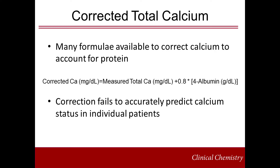Because total calcium concentration changes with protein concentration, several efforts have been made to develop formulas to correct for protein. The equation shown here demonstrates one of the most widely used examples. Correction formulas do work in some cases and regressions demonstrate good agreement between corrected and actual calcium concentrations. However, they often fail to accurately predict the calcium status of an individual patient.